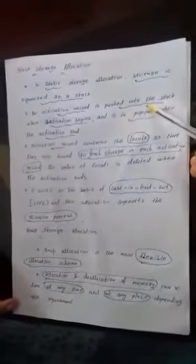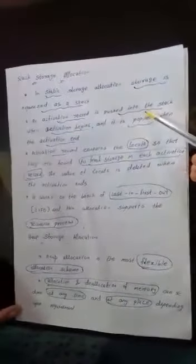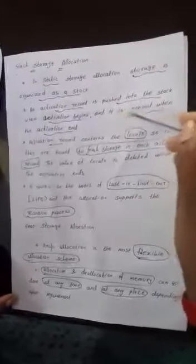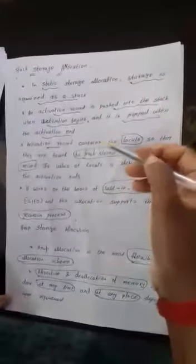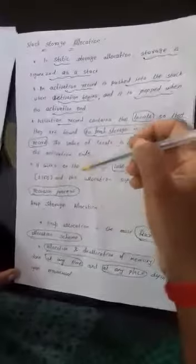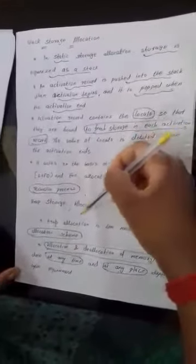In stack storage allocation, storage is organized as a stack using activation records. When activation begins, the activation record is pushed onto the stack; when activation ends, the activation record is popped. Activation records contain local data. Stack storage uses last-in-first-out order, and it supports recursive processes.